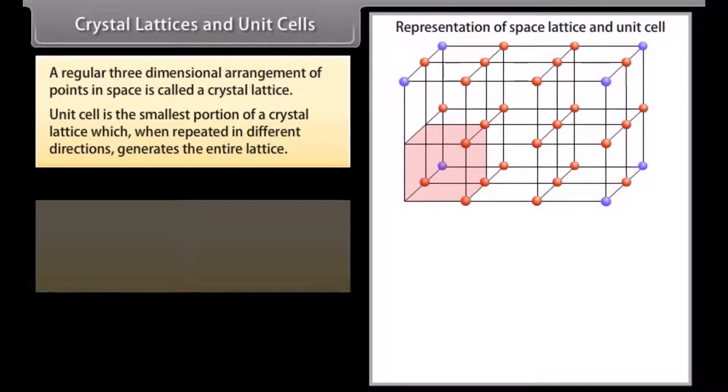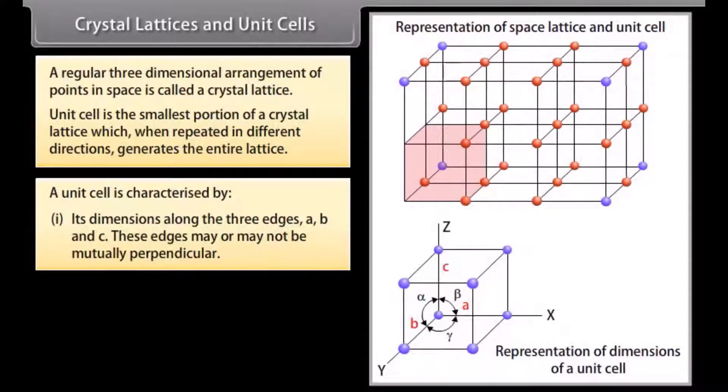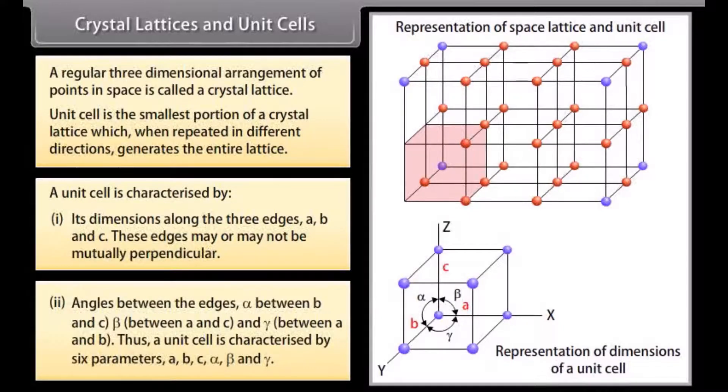The unit cell is characterized by: 1. Its dimensions along the three edges A, B, and C. These edges may or may not be mutually perpendicular. 2. Angles between the edges: alpha between B and C, beta between A and C, and gamma between A and B. Thus a unit cell is characterized by six parameters: A, B, C, alpha, beta, and gamma.